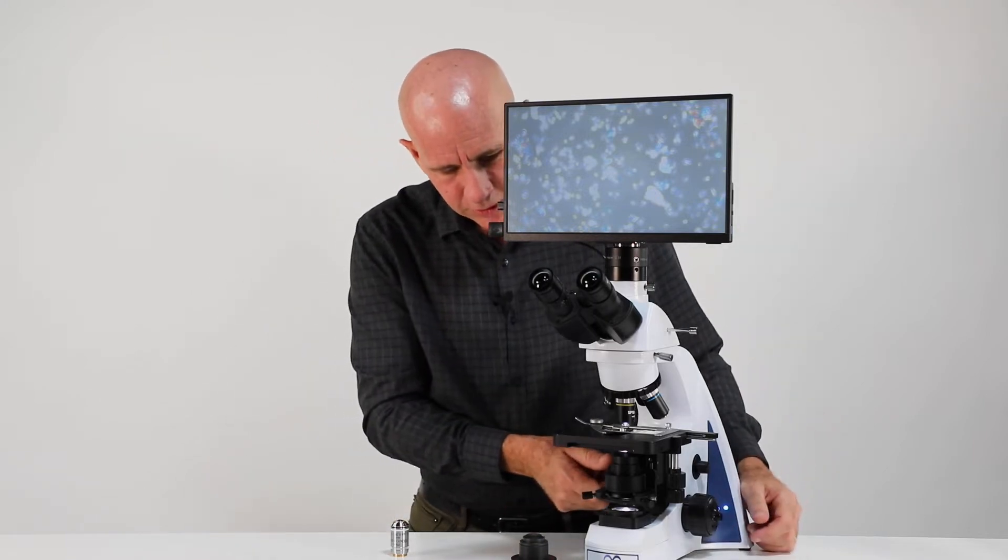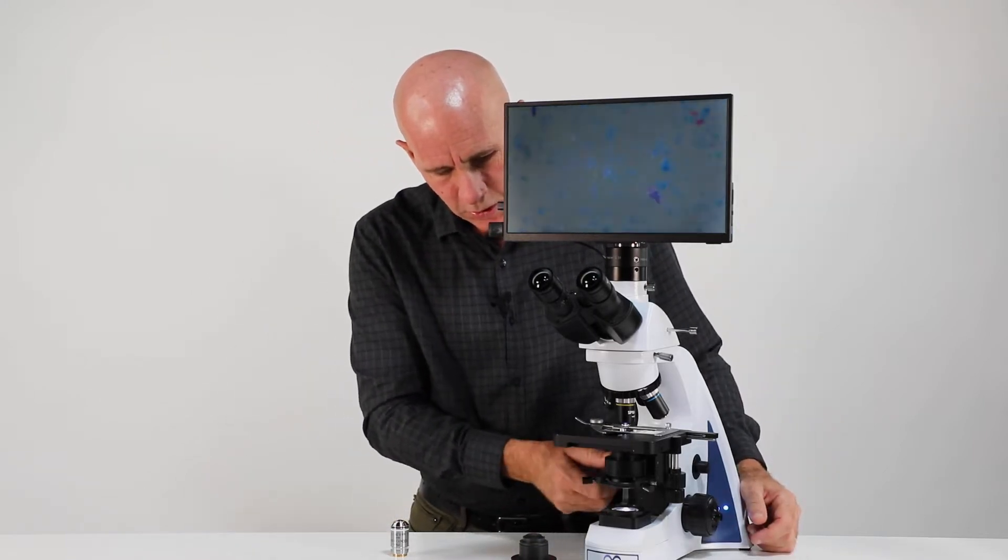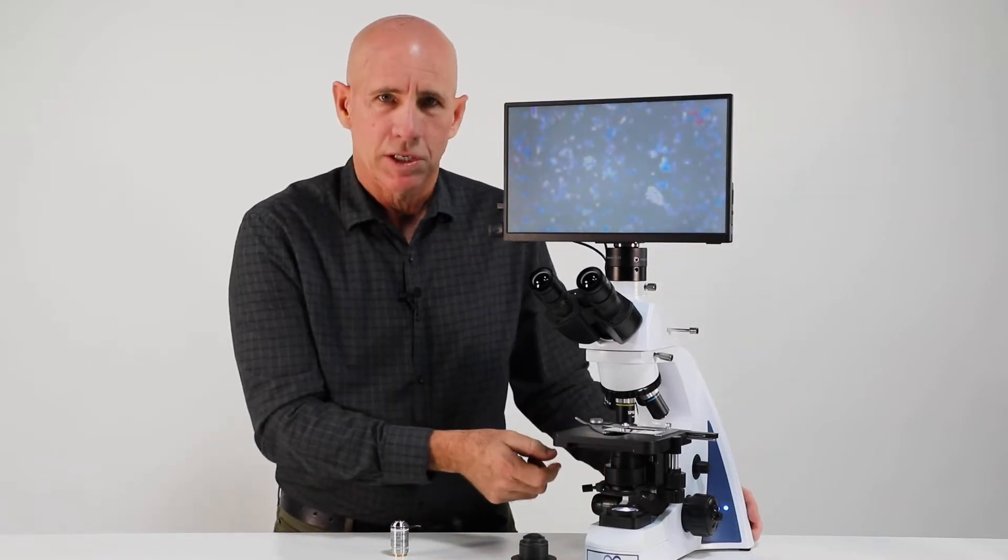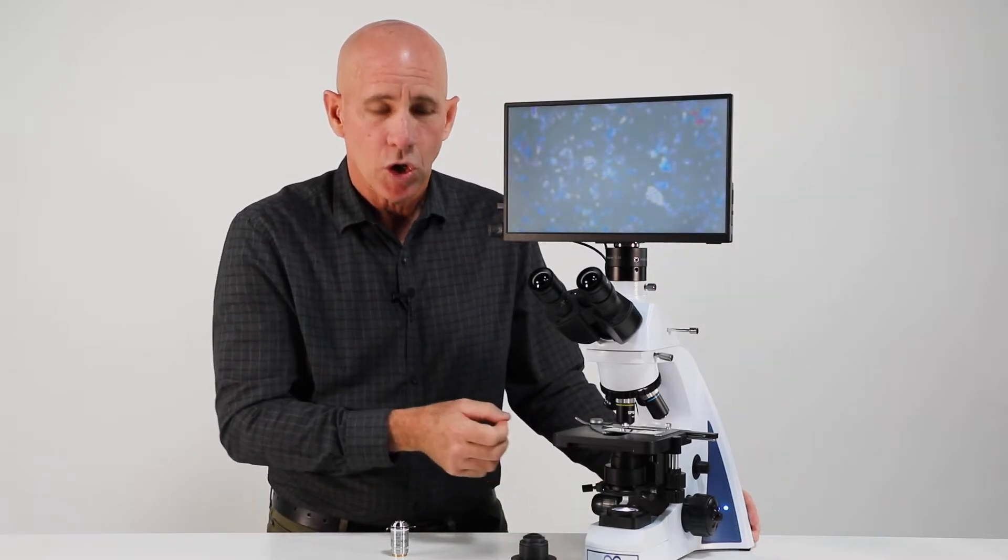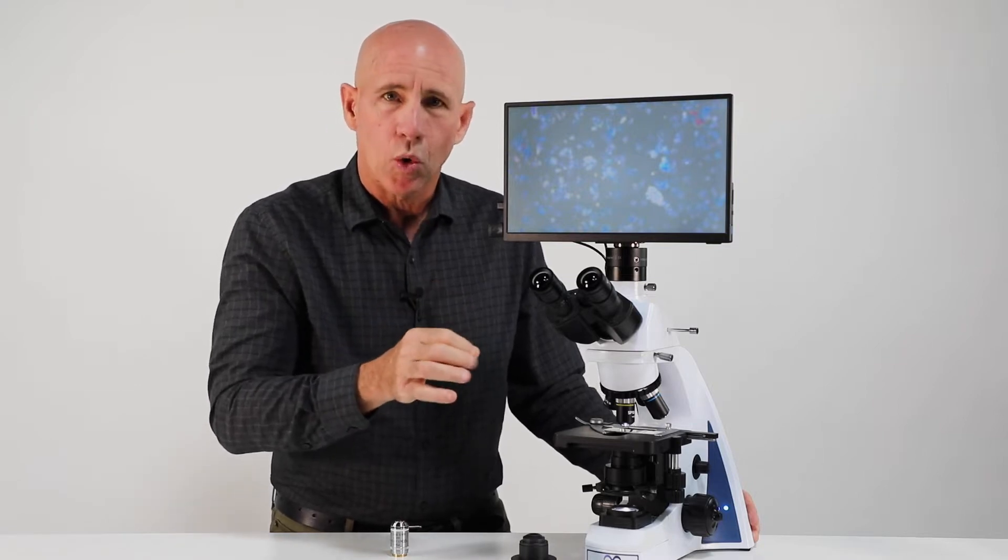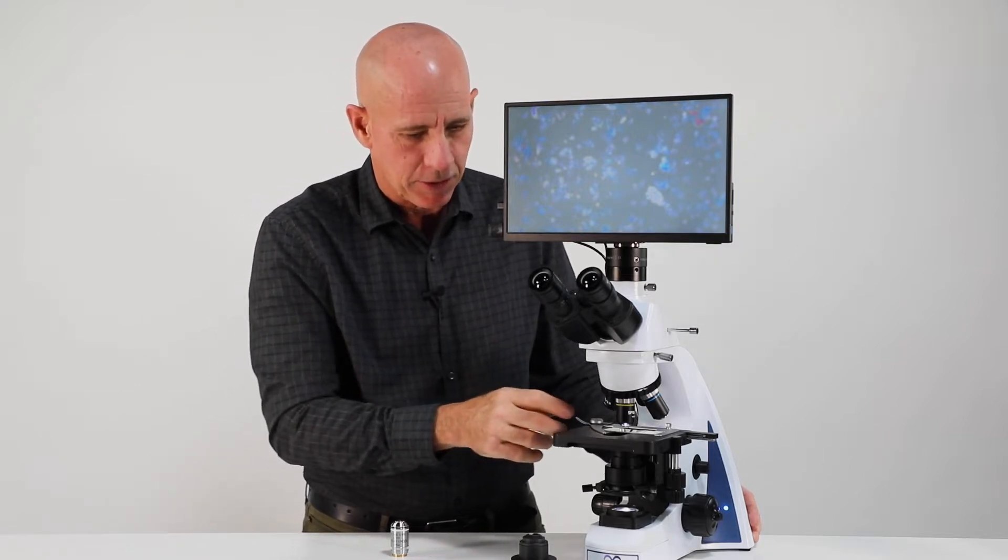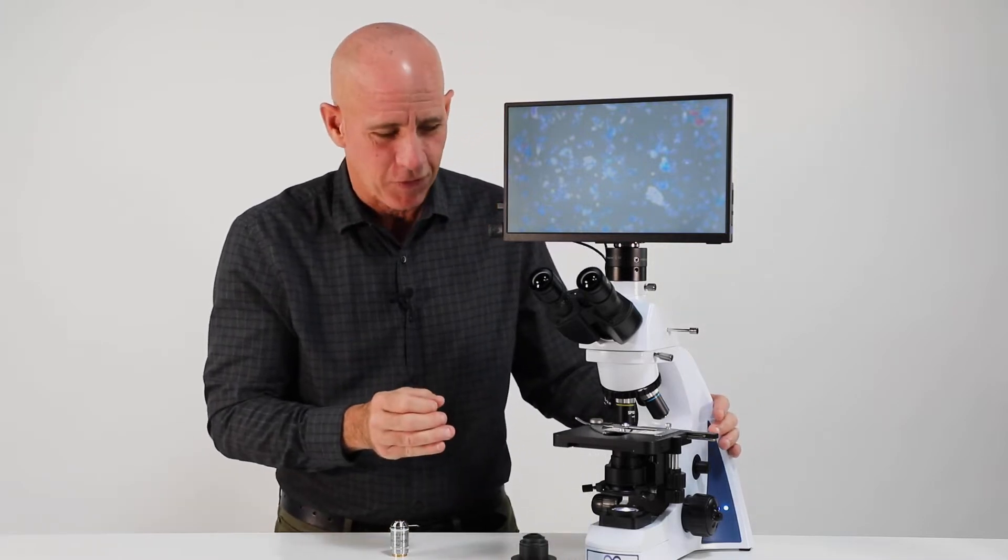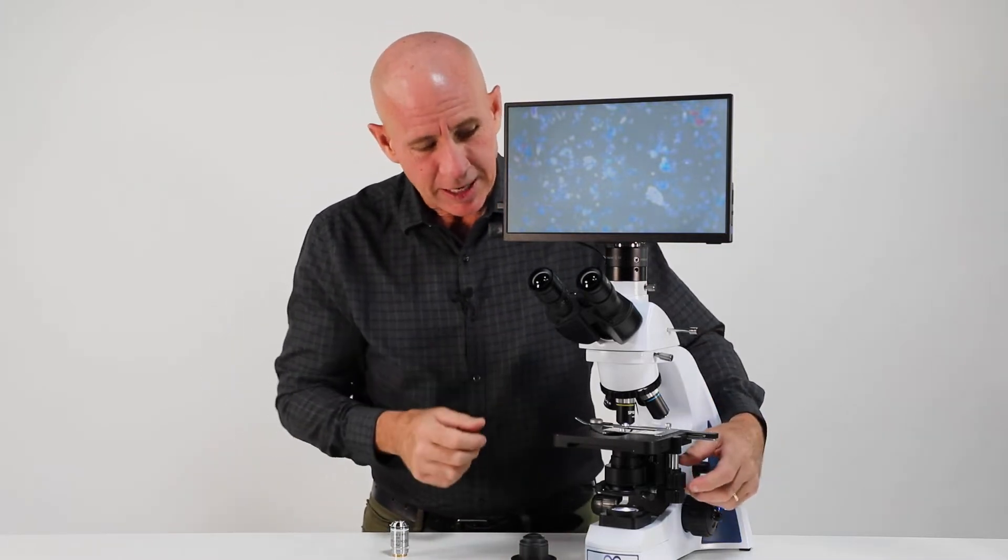So now our dark field condenser is in place, so we can come all the way up. Now this condenser is an oil dark field condenser, which means you're going to put oil on top of the condenser. So it's messy, you have to just be careful and do it in a careful way here.